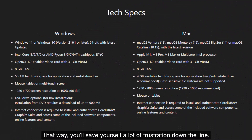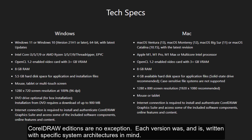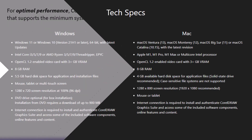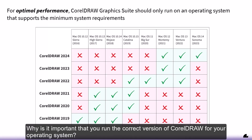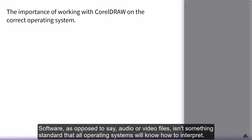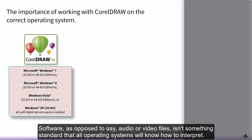CorelDraw editions are no exception — each version was and is written with specific system architectures in mind. Here, for example, I have an overview of which CorelDraw versions will run on which Windows or Mac operating systems. Why is this important? Software, as opposed to say audio or video files, isn't something standard that all operating systems will know how to interpret.